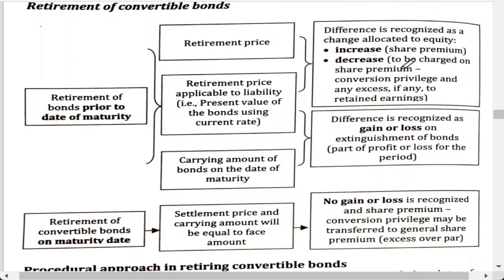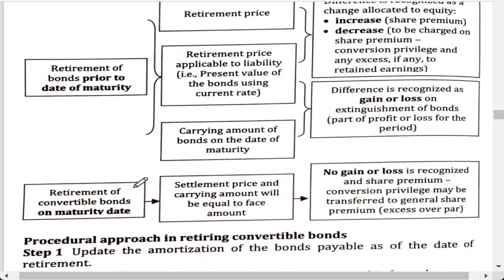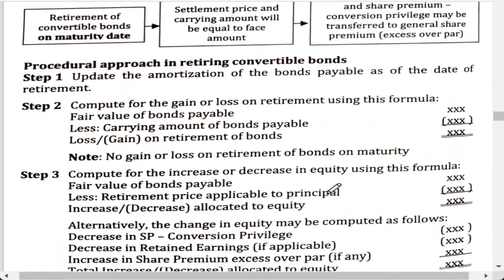Any excess, if any, is charged to retained earnings. Meanwhile, the difference between the retirement price applicable to liability and the carrying amount of the bonds on the date of maturity is recognized as gain or loss on extinguishment of bonds, which will be part of profit or loss for the period. If we retire the convertible bonds on the maturity date, there will be no problem because the settlement price and carrying amount are the same — therefore there is no gain or loss to be recognized. The share premium conversion privilege may be transferred to general share premium, classified as excess over par.